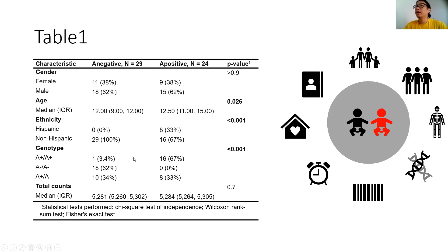In this way we can specifically see which kind of microbiome species affect the disease model. Here is Table 1, and for this model it specifically focuses on the age, genotype, and phenotype.